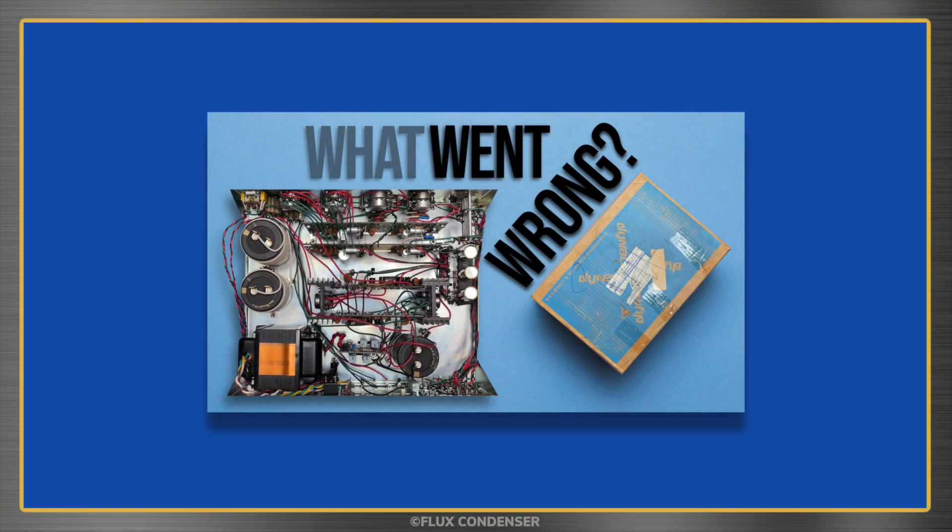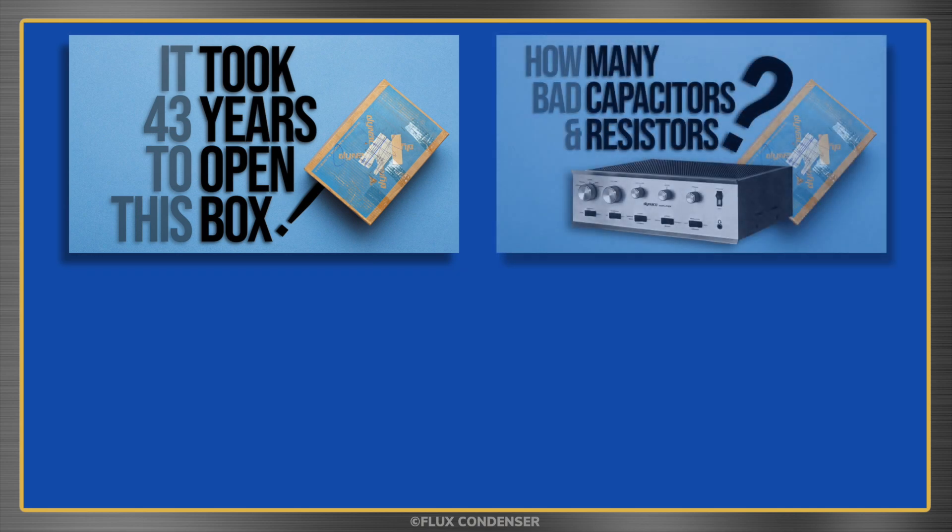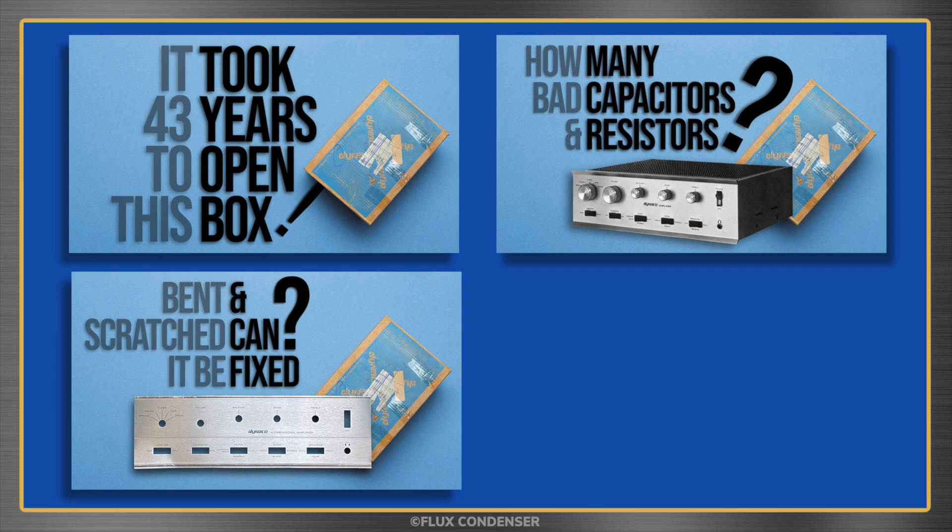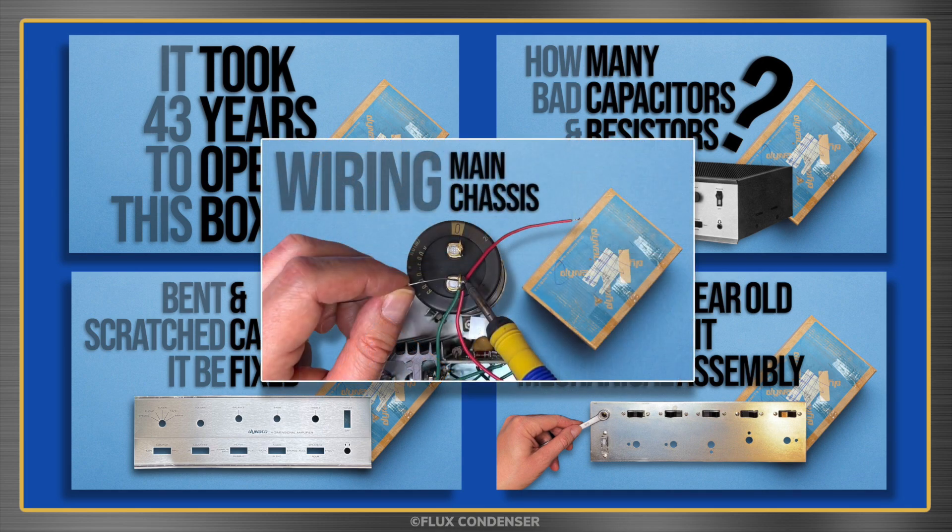Welcome to part 6 of the SCA-80Q amplifier kit series. In part 1, I unboxed the never-opened 1978 kit. In part 2, I tested the capacitors, resistors, and semiconductors. In part 3, I repaired the bent and scratched faceplate. In part 4, I completed the first section of the manual, mechanical assembly. And in part 5, I completed the second section, wiring the main chassis. If you missed those videos, you may want to go back and check them out. Links in the description.